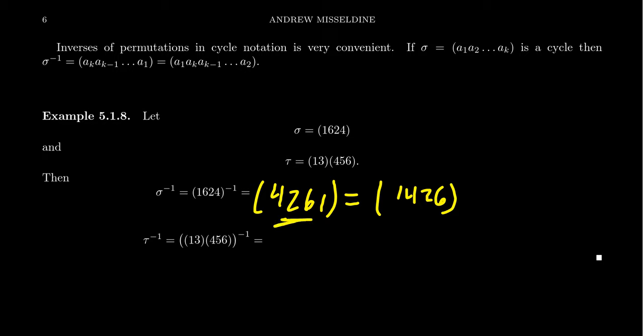But again, there's no requirement that you have to write the smallest element first in your cycle structure here. But the inverse is just writing the thing backwards and then move the last element to the front if you want the smallest element to be in the front. That's how we take care of cycles, inverses of cycles.